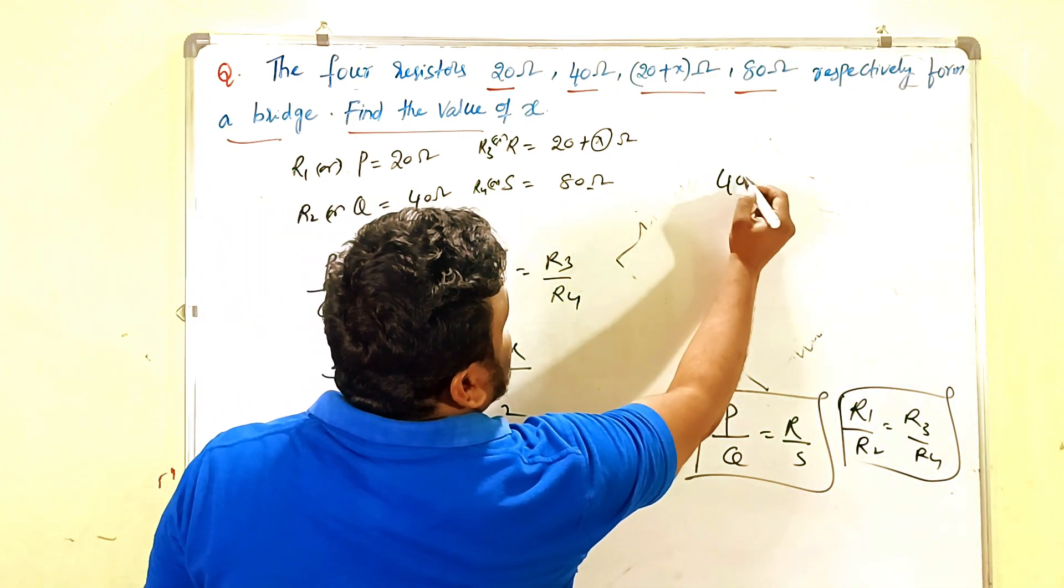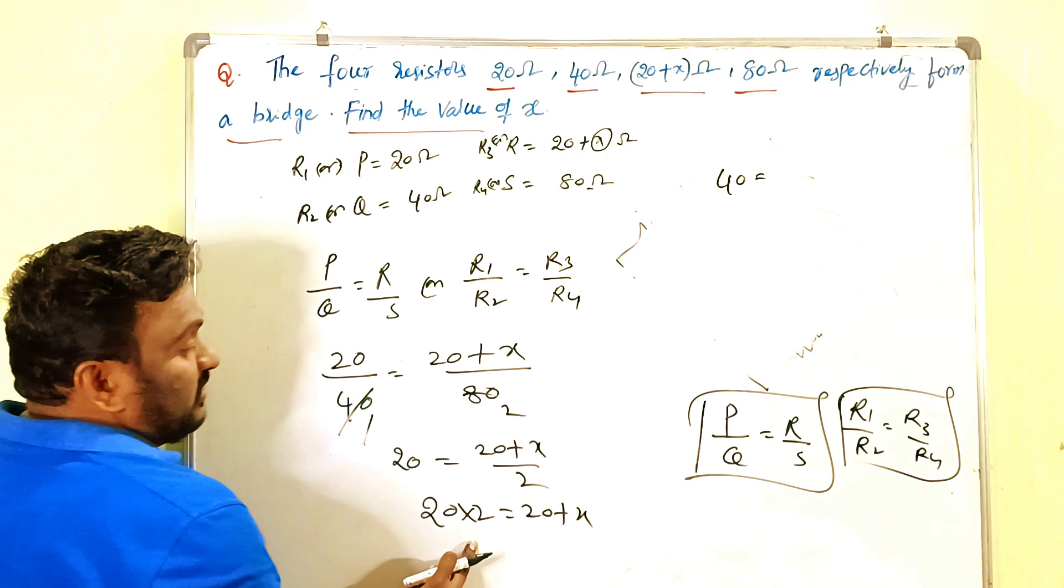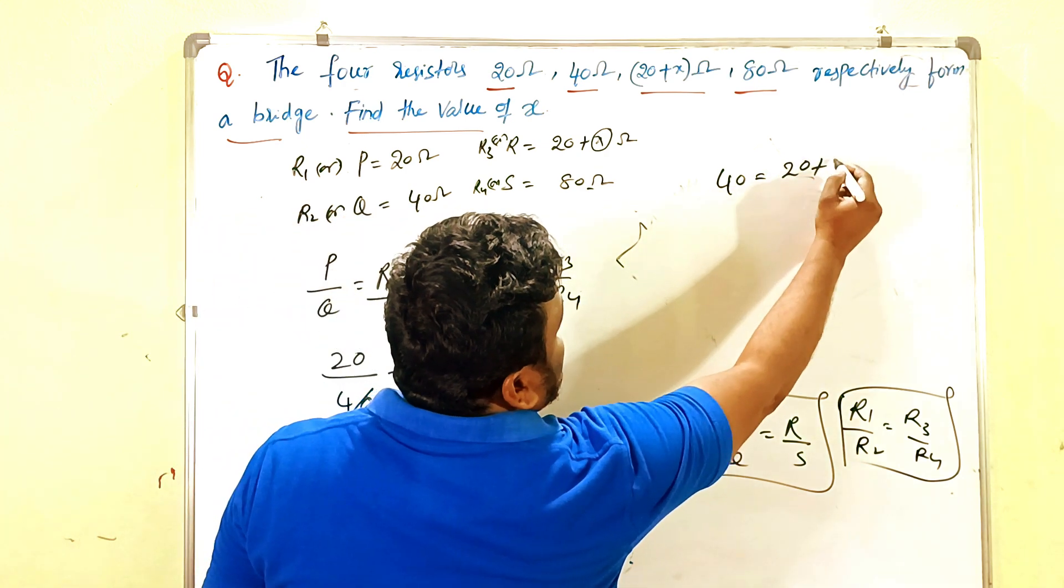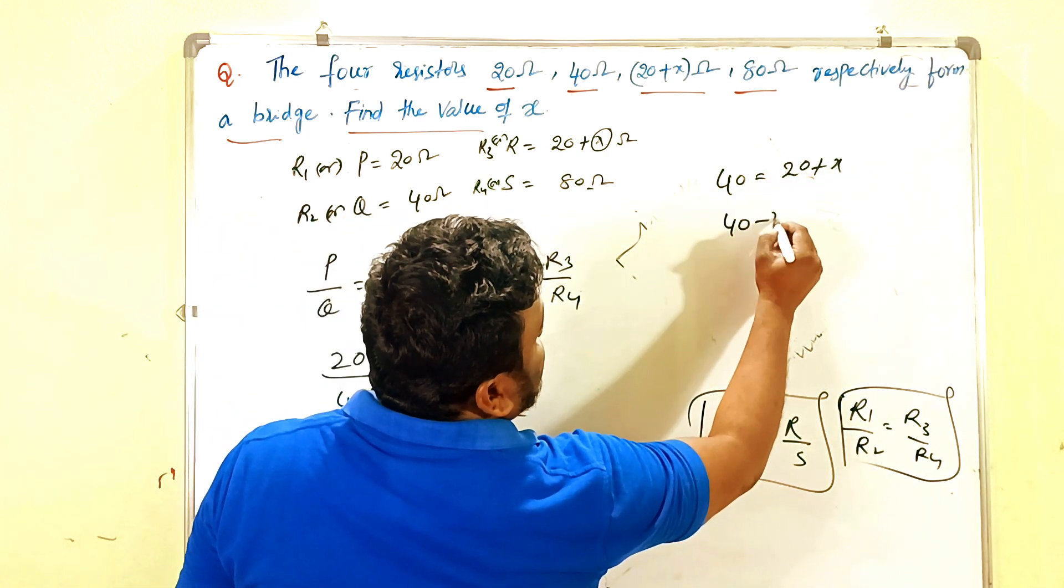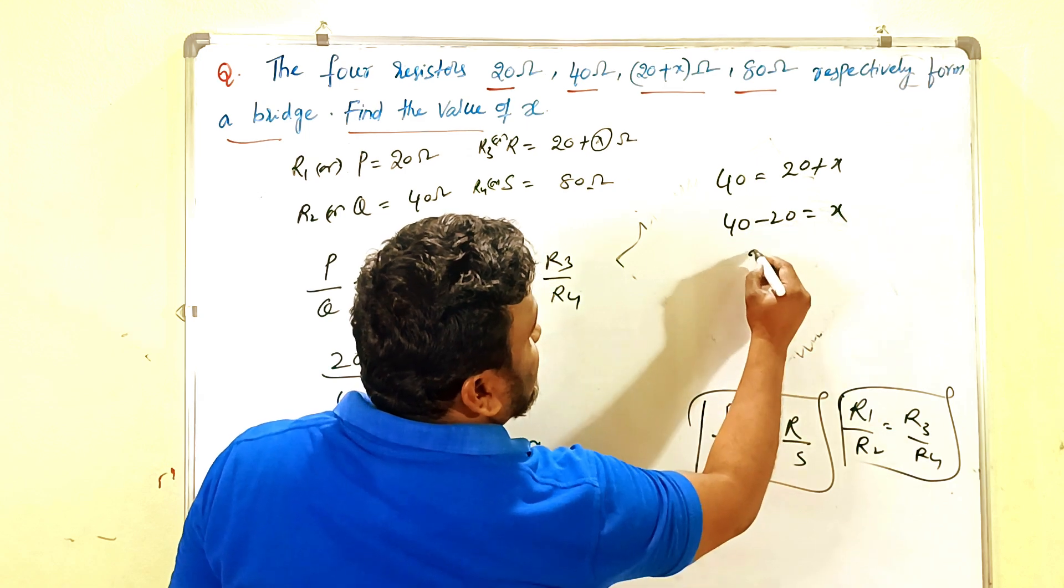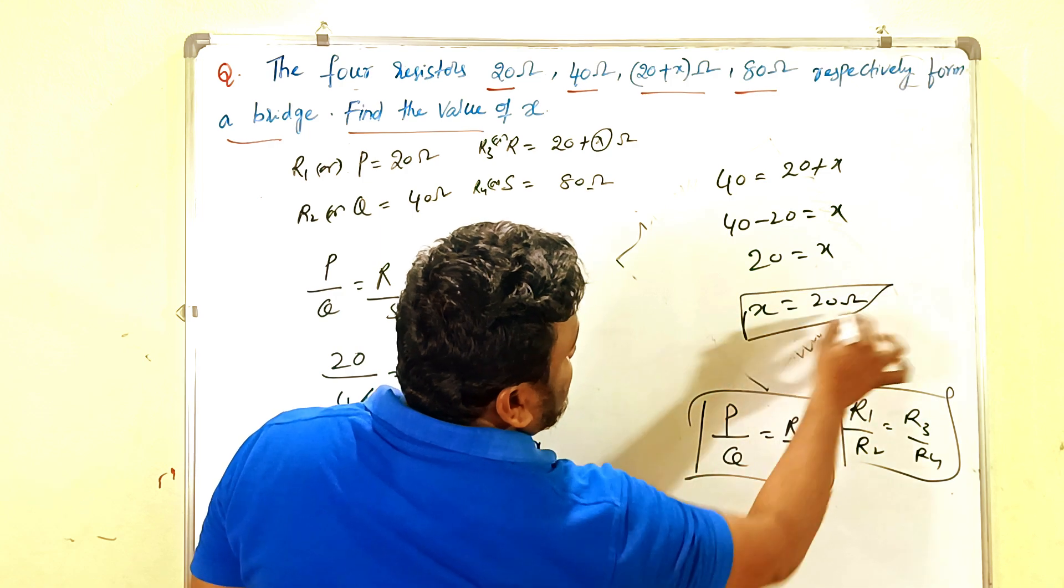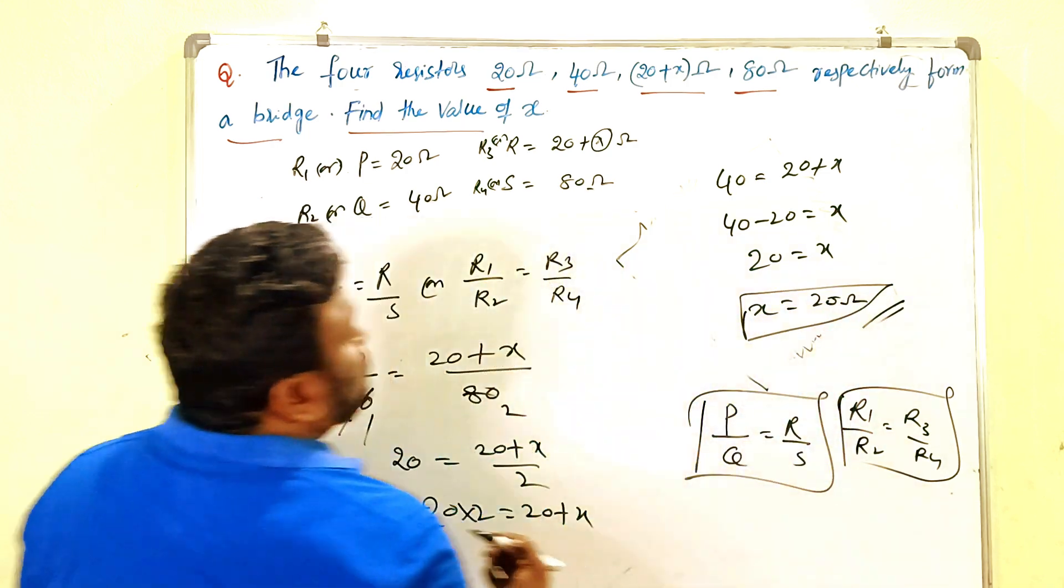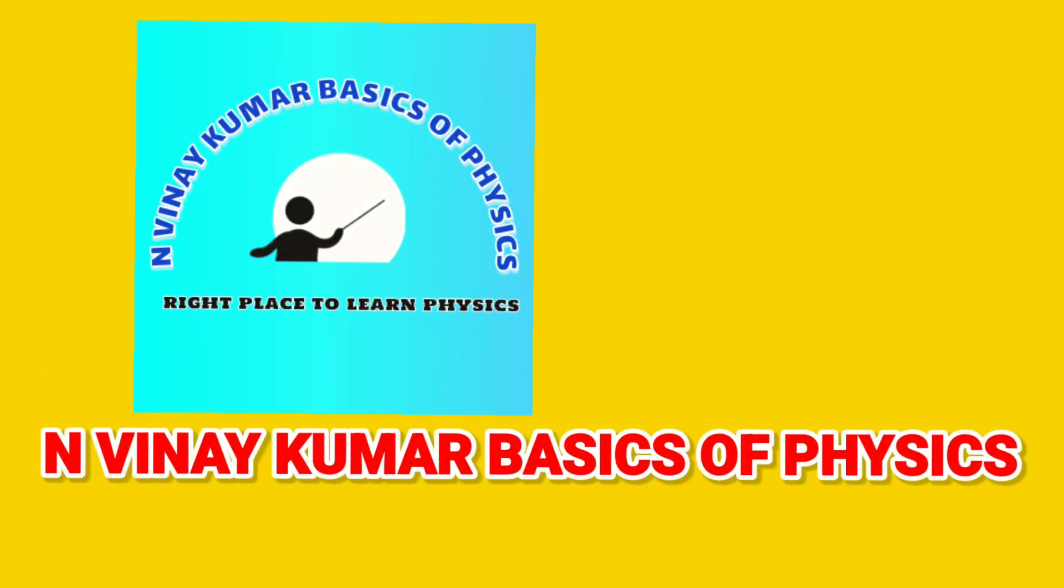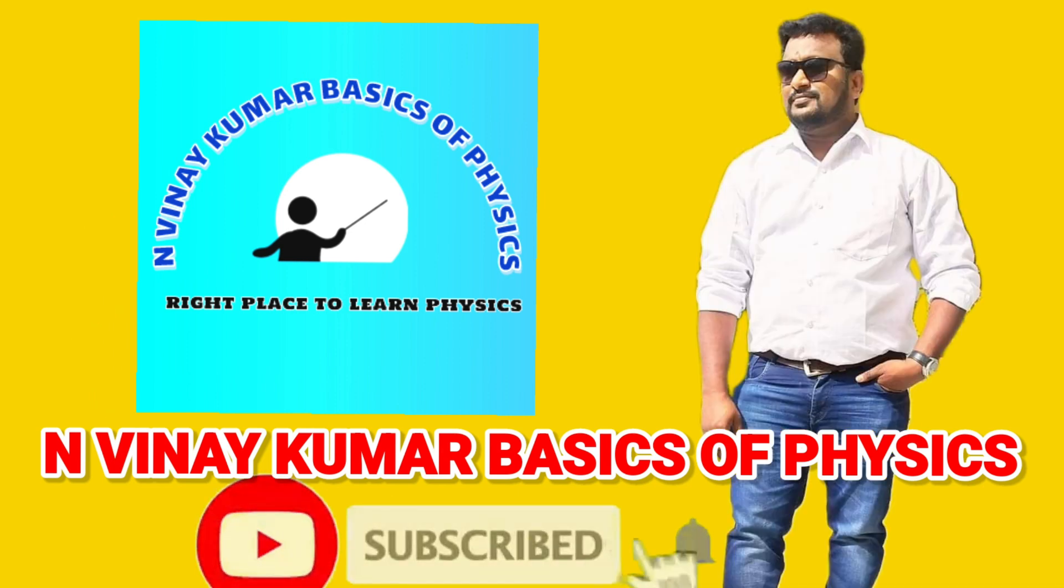Then 40 minus 20 equals X. Then 20 equals X, or X equals 20 ohms. This is the answer children.